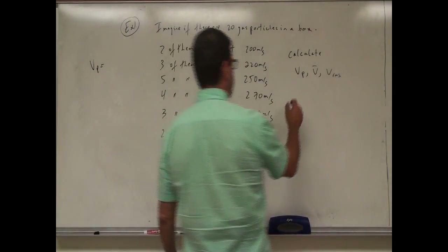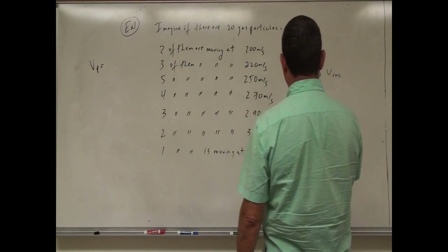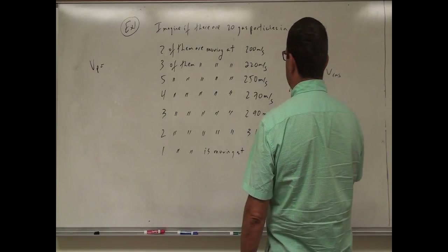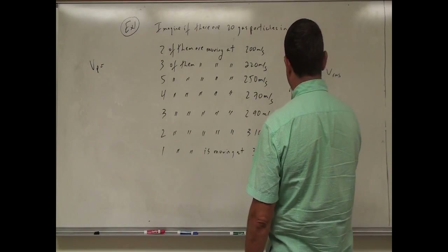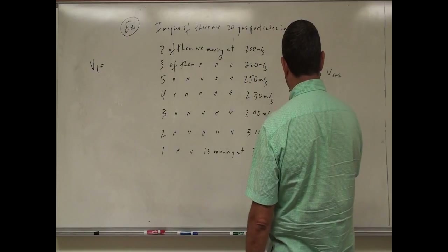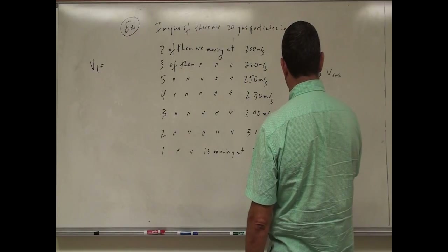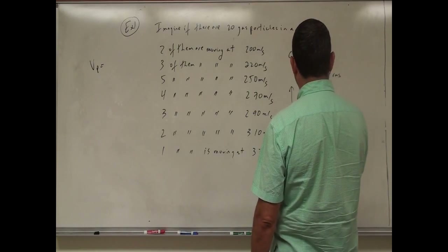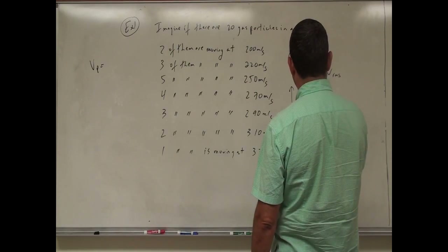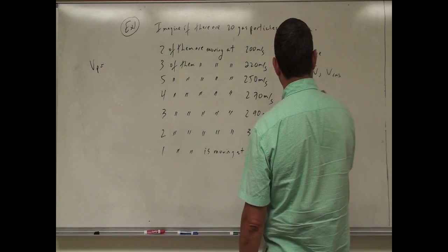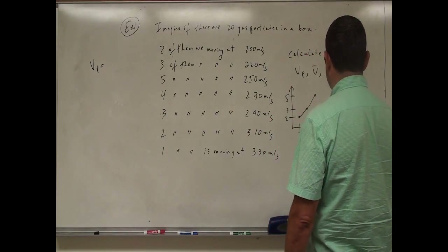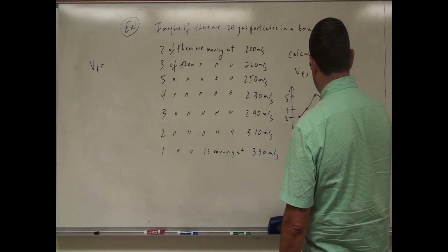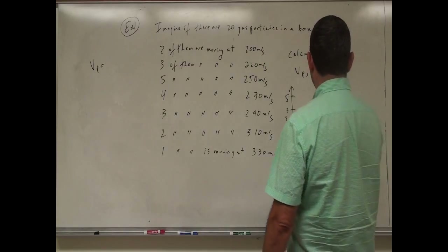So it's almost like a diagram. In your mind, you're almost making a histogram. At 200, there are two particles. At 220, there are three. Then you have 250 with five of them. Then 270 with four of them — so it starts to go down.